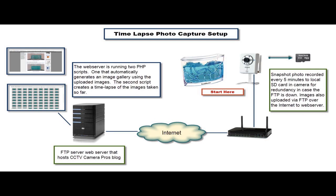A Xavio F3110 surveillance camera was configured to record a 1280x720 resolution photo to the microSD card inserted into the camera. The camera is connected to a network router and internet connection, which enables the camera to also upload the photos to an FTP server. The FTP server is on the same physical server that hosts the CCTV Camera Pro's blog.